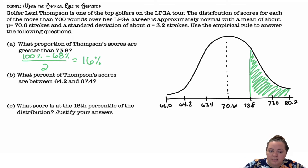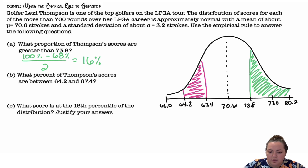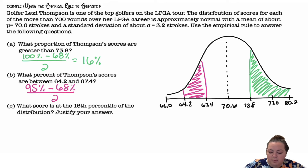What percent of Thompson's scores are between 64.2 and 67.4? Looking at the distribution, that section was 13.5%. Or I can do 95 minus 68% divided by 2, and we get 13.5%.